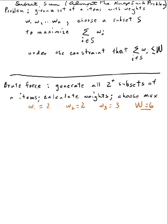So a brute force approach to this would be, generate all 2 to the n subsets and then calculate the weights and choose the max. So I have three items here so that means I will be generating eight subsets. So let me go ahead and write down those eight subsets here.